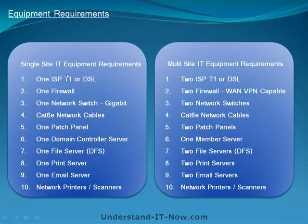To recap the equipment requirements for a single site or single location: your ISP provides a T1 or DSL line. You'll need one firewall, one network switch — preferably gigabit — which also requires your client devices to have gigabit network cards. And to transfer data fast over the lines you need Category 6E network cables. Those are the three items to making your network fast: the gigabit switch, gigabit network cards, and Category 6E cables.